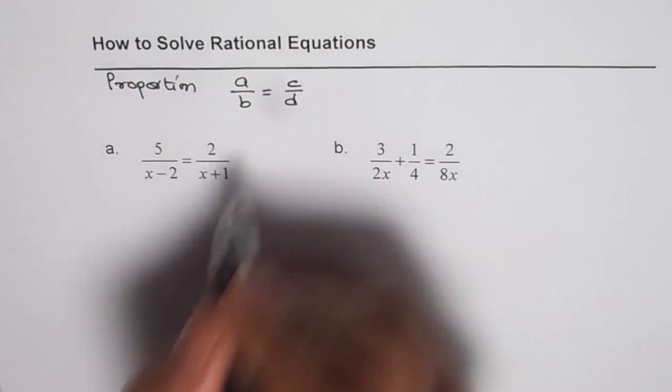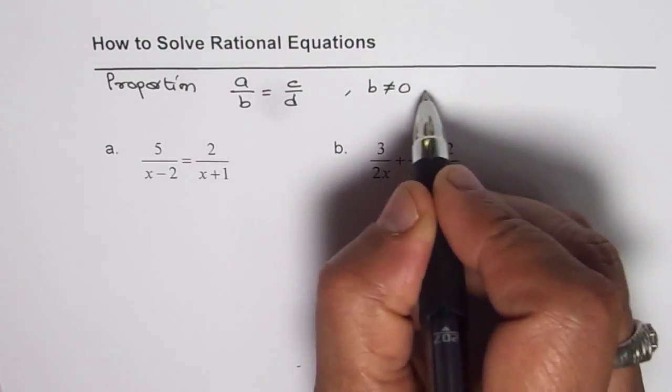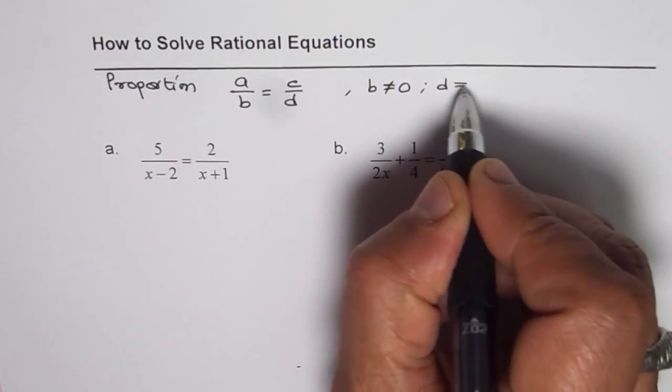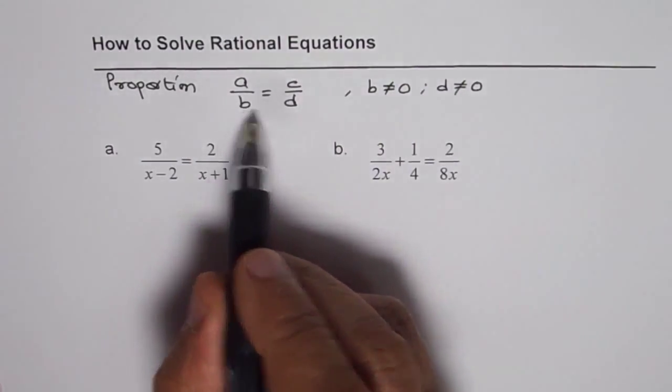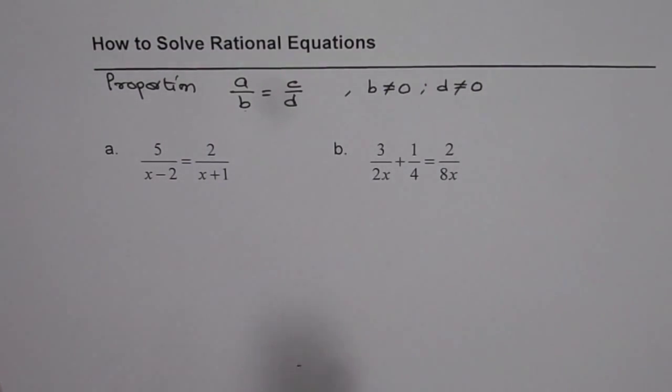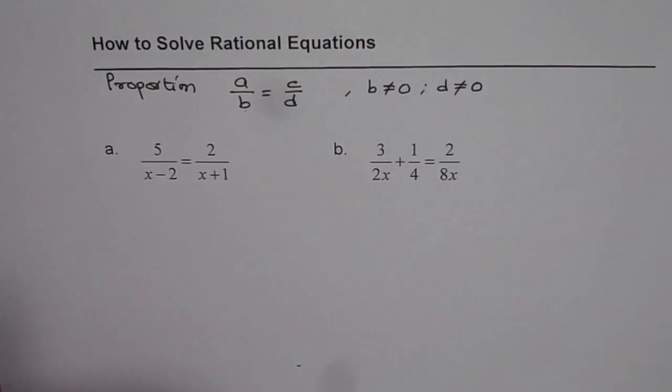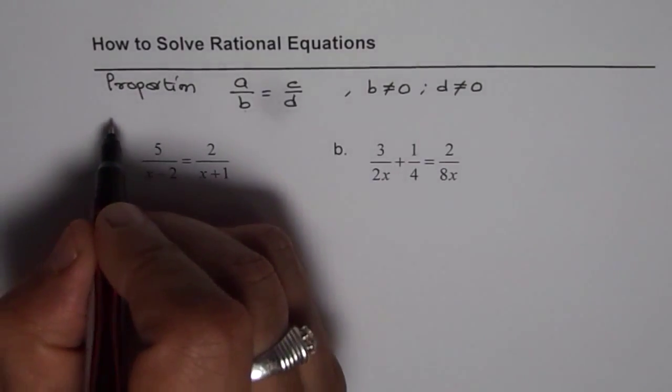And in this proportion, you should note that B should not be equal to 0, and even D should not be equal to 0, since denominator cannot be 0. It makes it undefined. In such a case, when you have A over B equals to C over D, the method to follow is cross multiply.